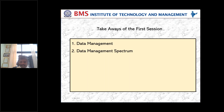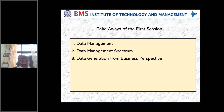The third takeaway is data generation from a business perspective — how data is generated from surveys, reviews, product feedback, billing systems, finance systems, banks, and book accounts; data is getting generated from every corner. We also saw different types of data: structured, semi-structured, and unstructured. Structured data consists of rows and columns.